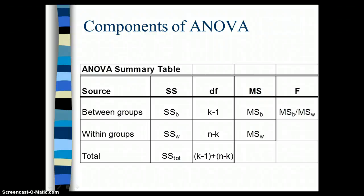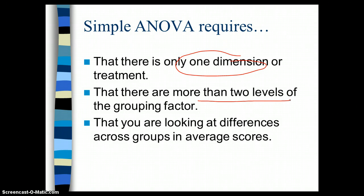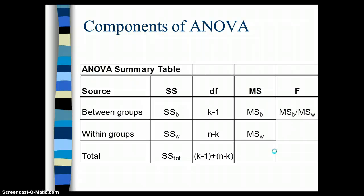Welcome back to our discussion about ANOVA. My name is Alex Wiseman and we have been looking at some of the different ways that we can conceptually think about ANOVA. Remember that ANOVA is a way to look at one grouping dimension and more than two levels of that grouping dimension, and we're looking at differences across groups and average scores. ANOVA is conceptually similar to a t-test in that it is looking at group mean differences — just that instead of two groups, we're looking at three or more groups within ANOVA.